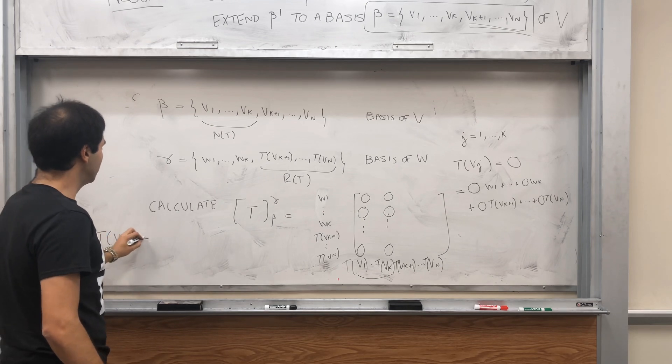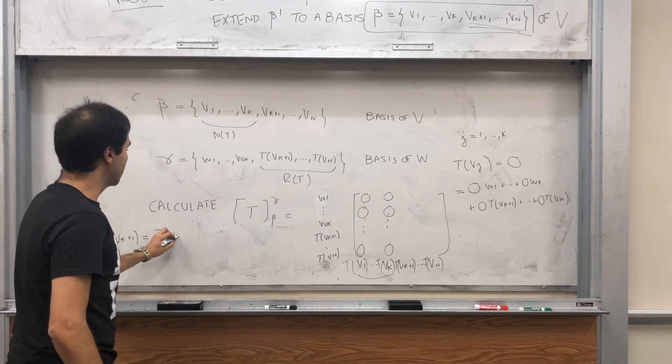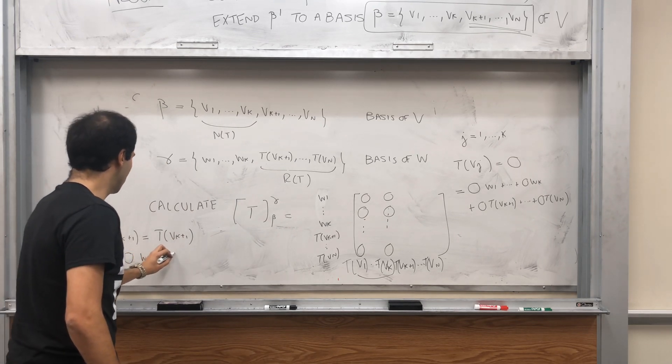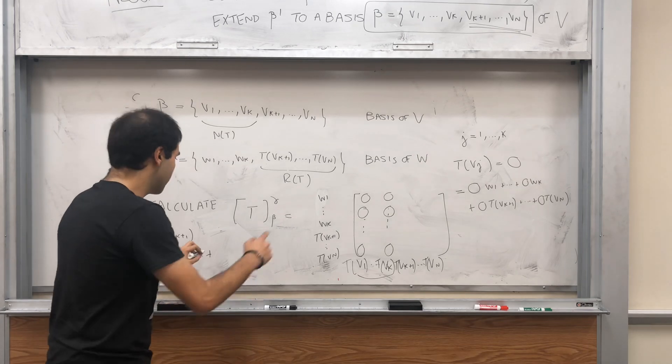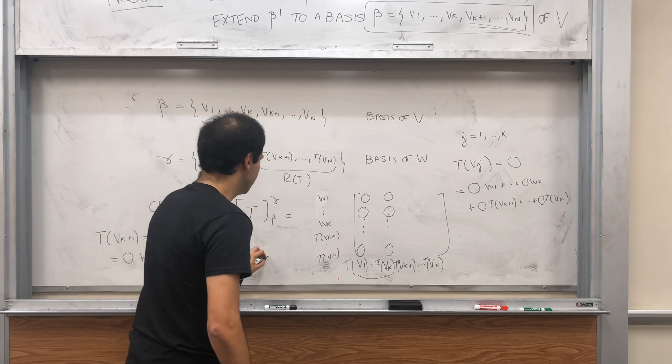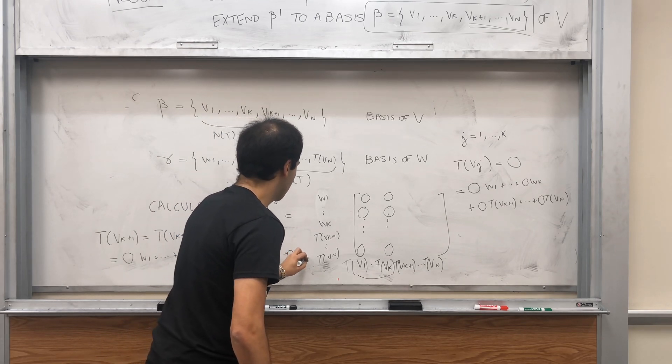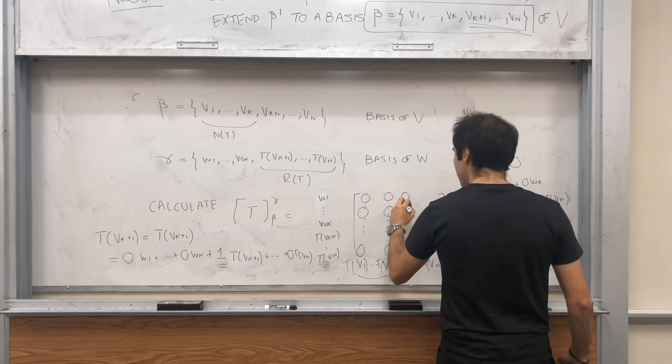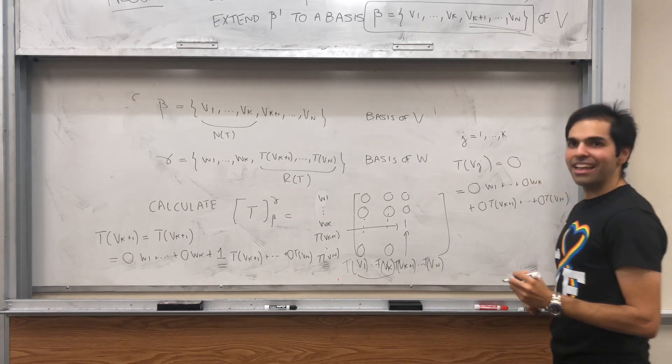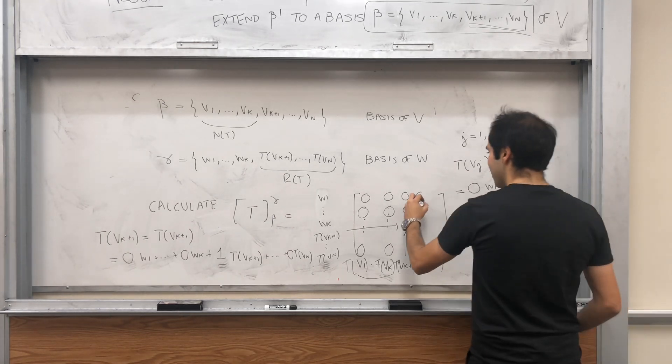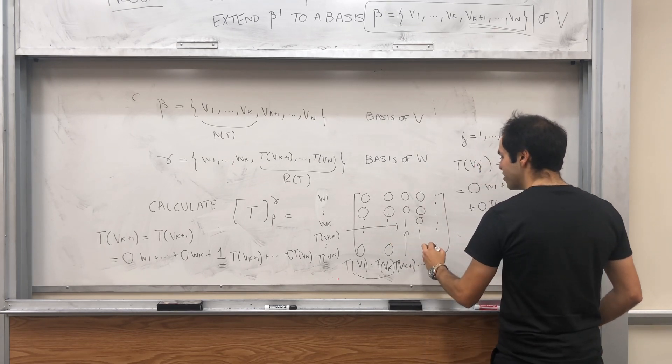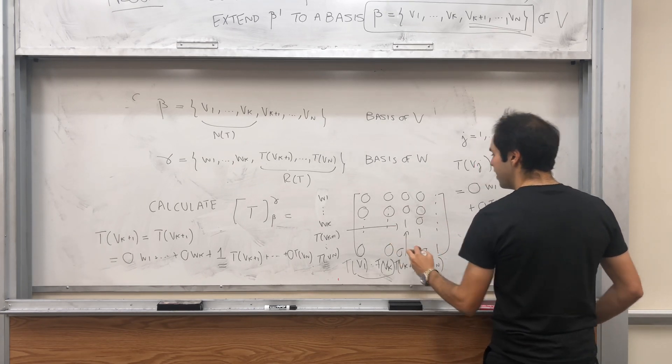But t of vk plus one is t of vk plus one, which is just a bunch of zeros, w1 up to wk, and then one times t of vk plus one, plus 0 times everything else. So what this column becomes, becomes bunch of zeros, except precisely one at the diagonal entry. And if you continue this way, you get a one here, until the very last entry, which becomes a one, and then bunch of zeros.